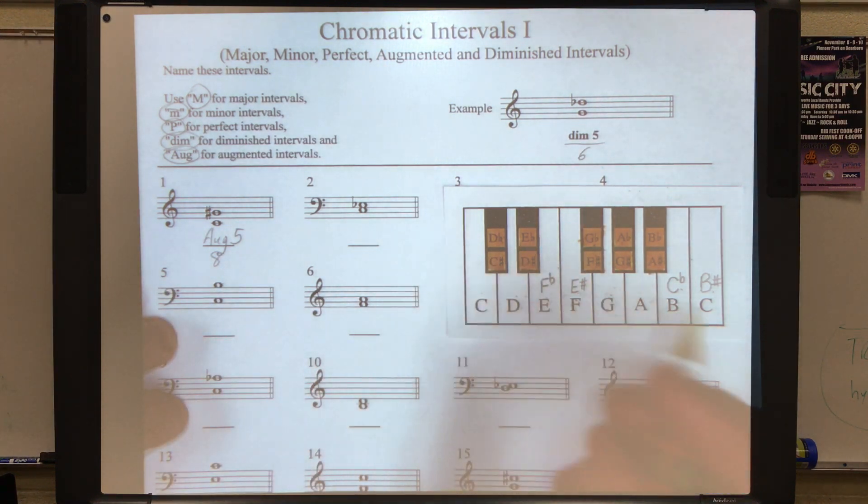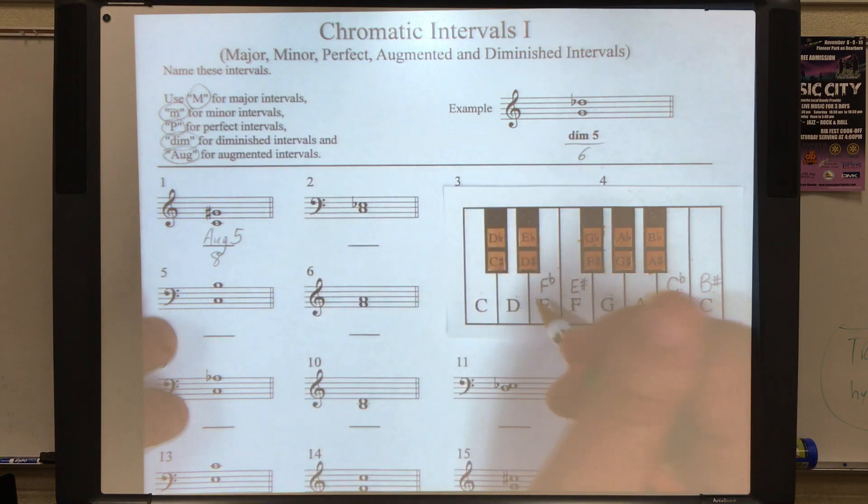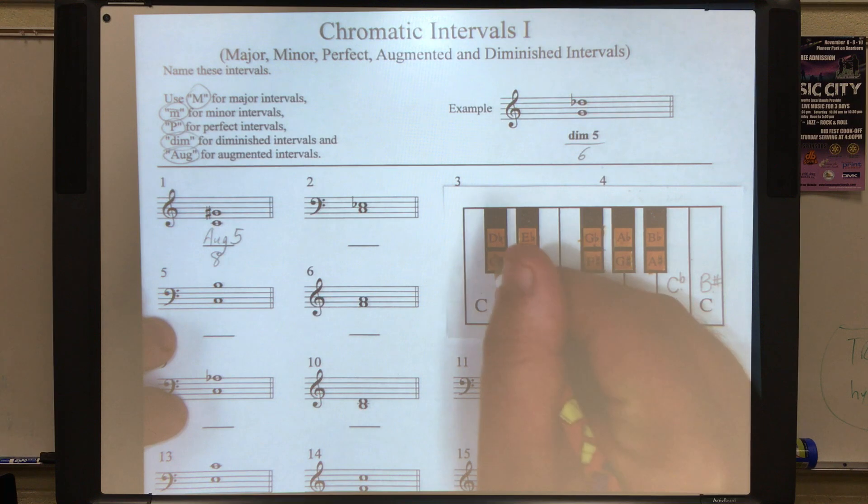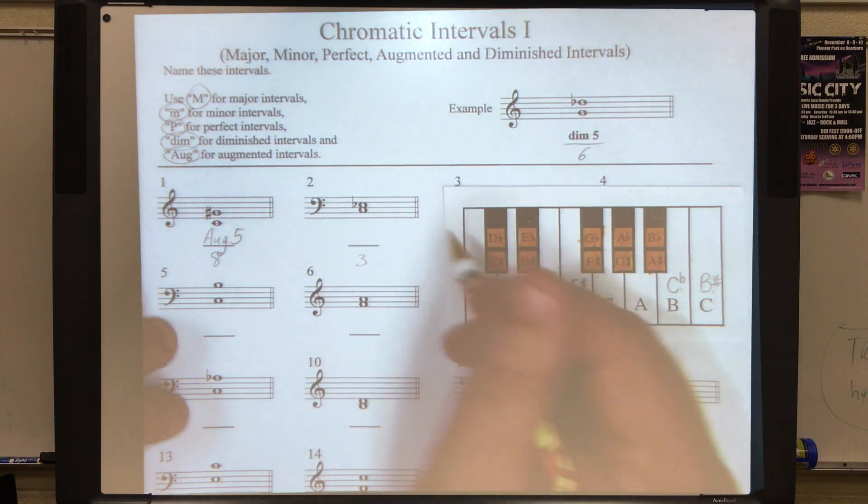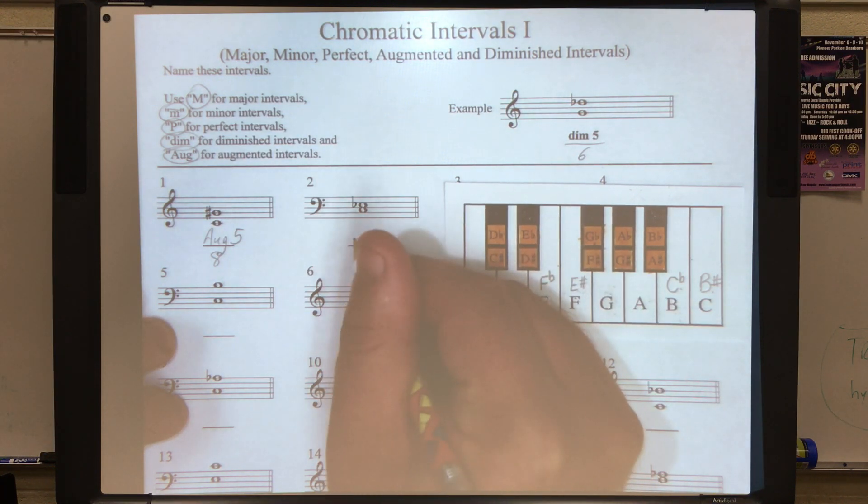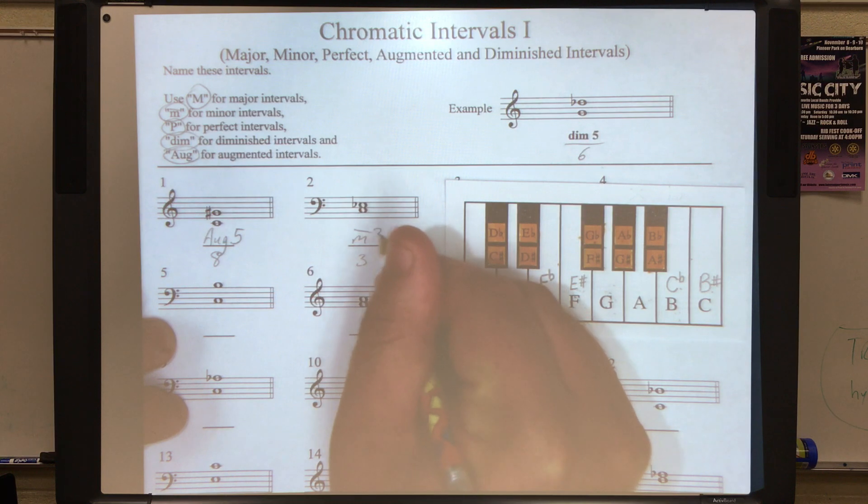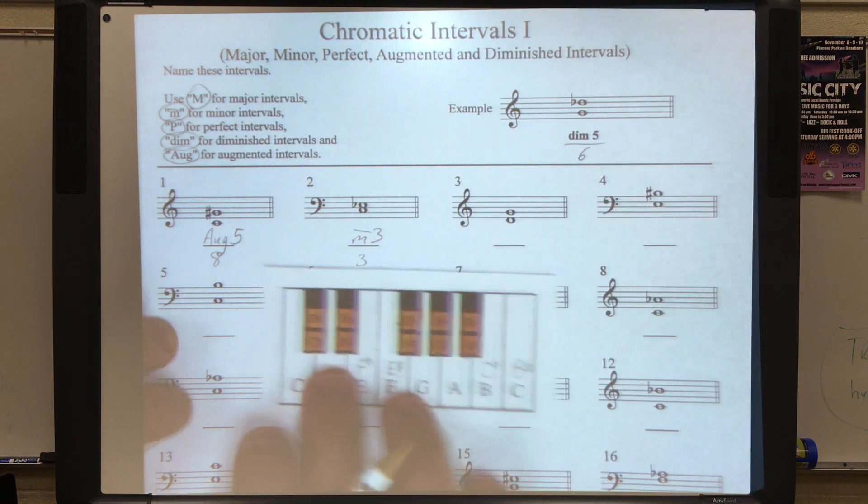Number two. We see a C and an E flat. Remember, we're in bass clef now. C is zero, one, two, three. Three half steps. We can see that that is a minor third. Remember to draw the line.